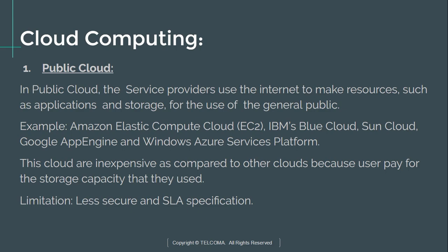Examples of companies providing public clouds include Amazon Elastic Compute Cloud (EC2), IBM's Blue Cloud, Sun Cloud, Google App Engine, and the Windows Azure Services Platform. These clouds are inexpensive compared to other clouds because users pay only for the storage capacity they use. The limitation of public cloud is that it is less secure and has less strict SLA specifications.